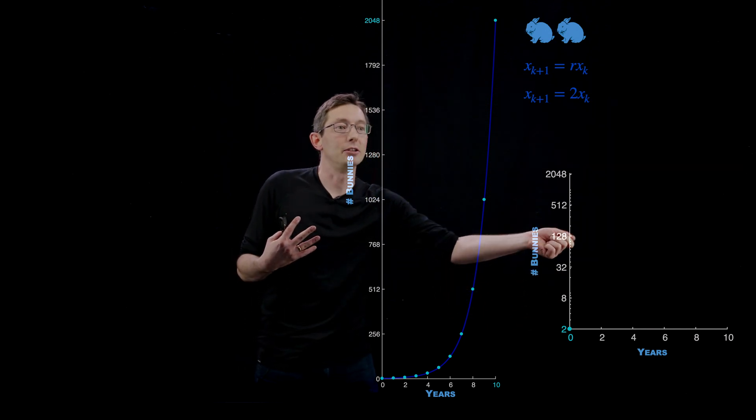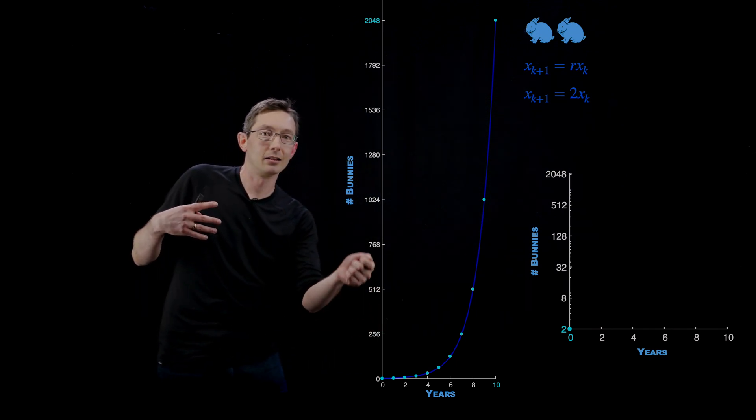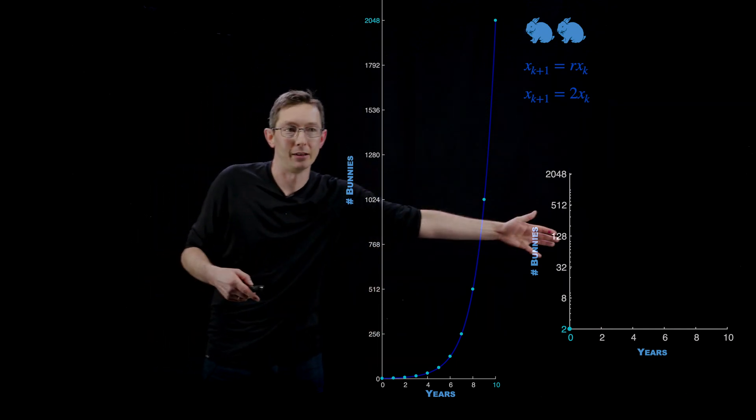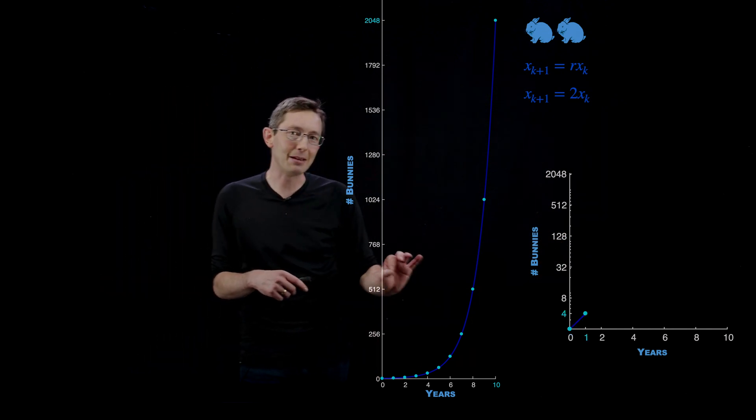32 to 128, every time I go up in the y, I'm multiplying by 4. I'm not just adding more bunnies, I'm multiplying the number of bunnies. That's what logarithmic coordinates do.